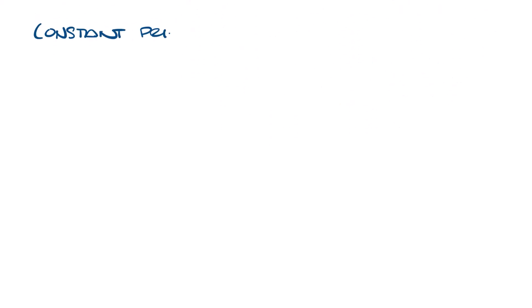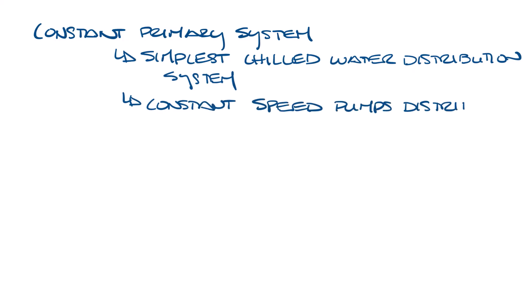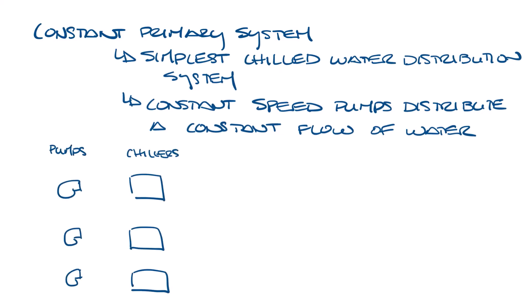Originally, there was the constant primary circulation system. It's the simplest chilled water distribution system. In it, constant speed pumps distribute a constant flow of water at all times. So let's draw this. Let's say we have three pumps, three chillers, and three air handlers.